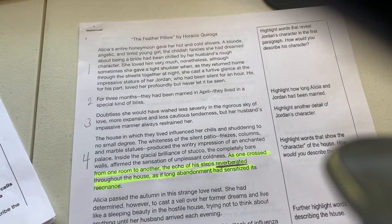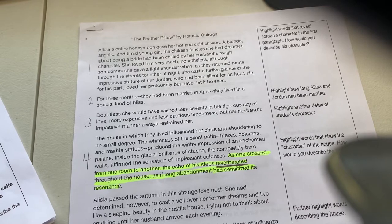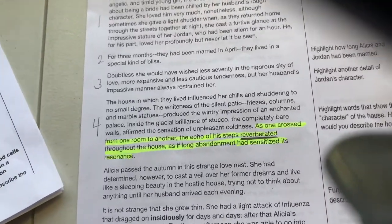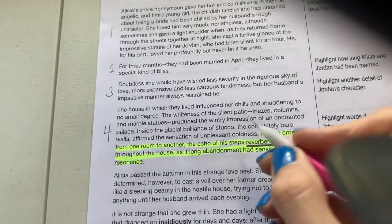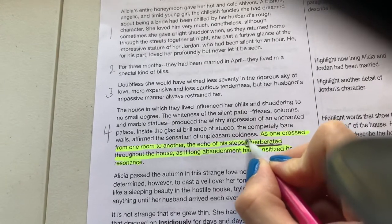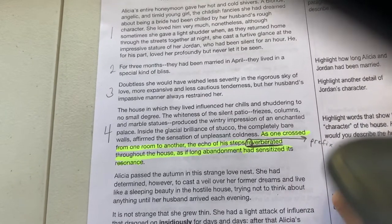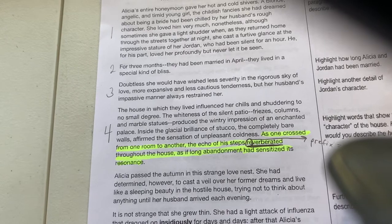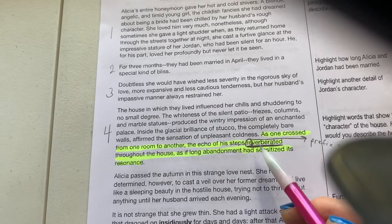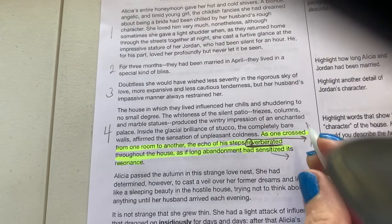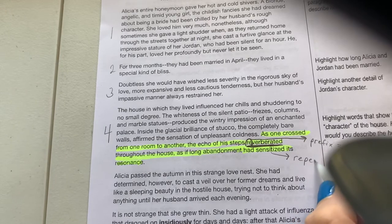The vocabulary I am highlighting is what you need to know for your test this week over this short story. The first thing I want you to notice when you look at the word 'reverberated' is the prefix 're-.' That prefix means 'again' — if you redo something, you do it again; if you repeat something, you say it again. So 'reverberate' means something is happening again and again. Reverberate is the repeating of a sound.